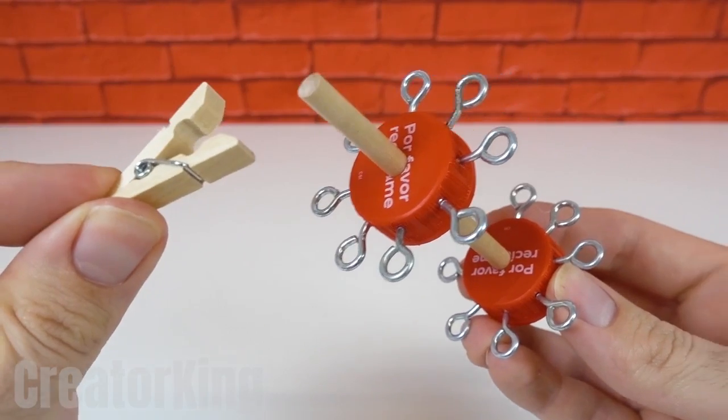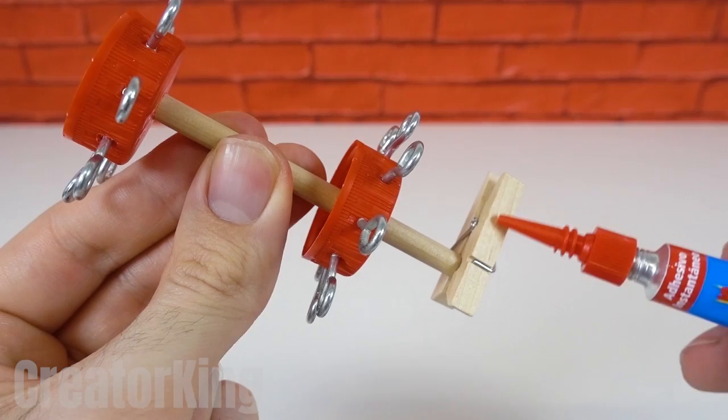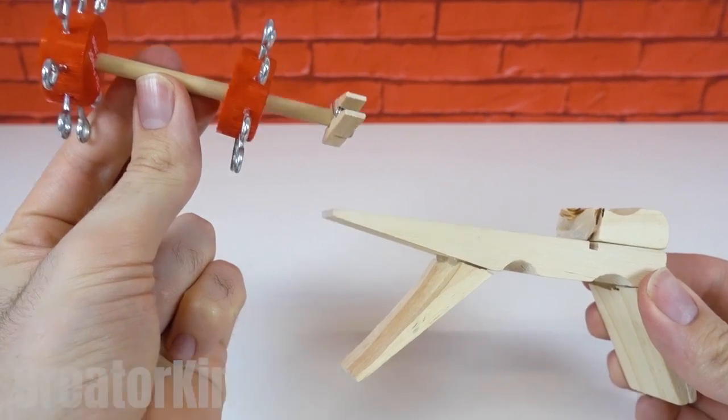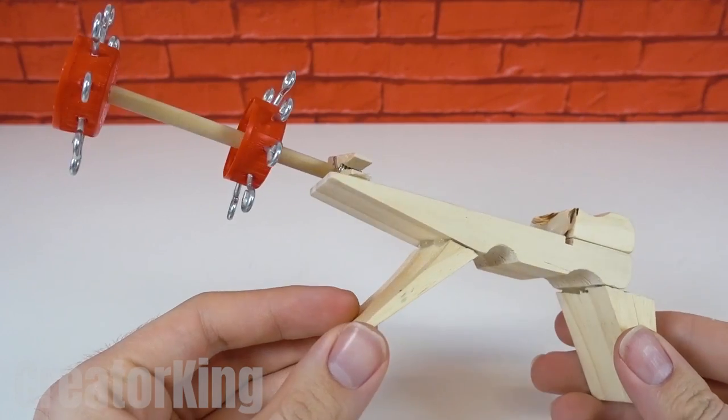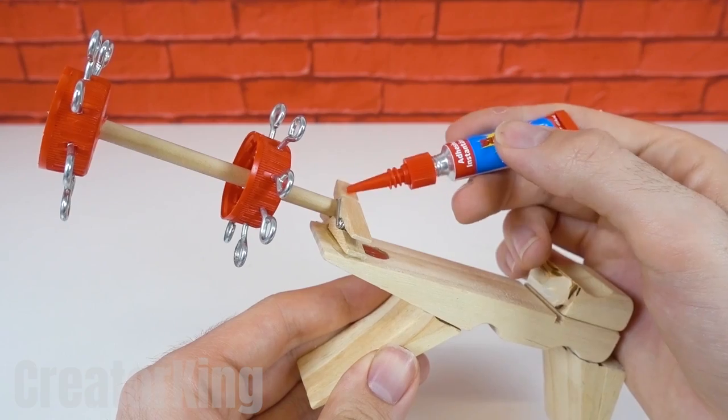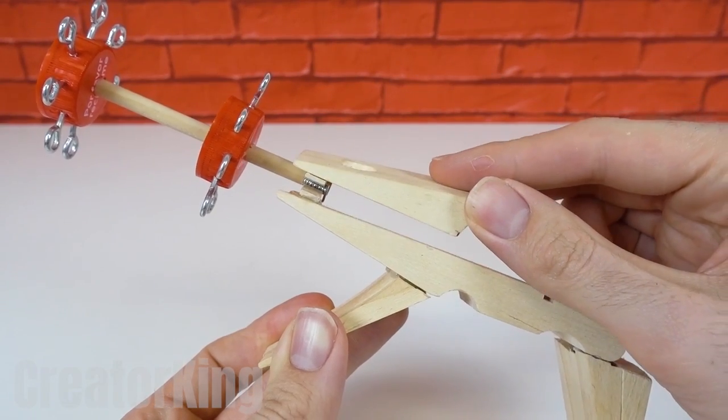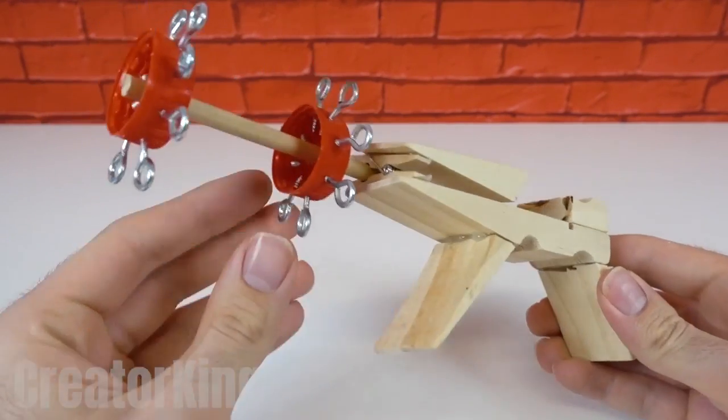Find a normal size clothespin and attach it to the shorter side of the wooden stick. Then put some glue on it and stick it to the structure of our firework launcher. Put another triangular piece of wood on top of the hook we just attached to secure the extension.